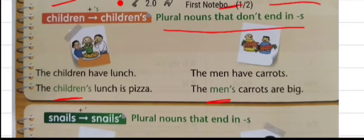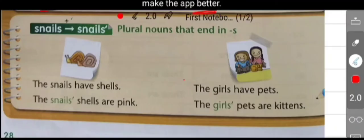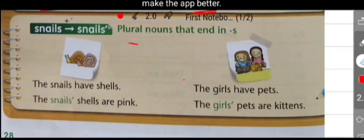Now according to our next rule, we add only an apostrophe to make a plural noun ending in S possessive. We cannot use apostrophe plus S if a plural noun ends with S.